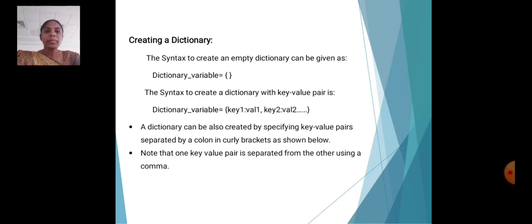Creating a dictionary. The syntax: dictionary_variable = {key1: value1, key2: value2}. Dictionary can also be created by specifying key-value pairs separated by a colon in curly brackets. Note that one key-value pair is separated from the other using commas.